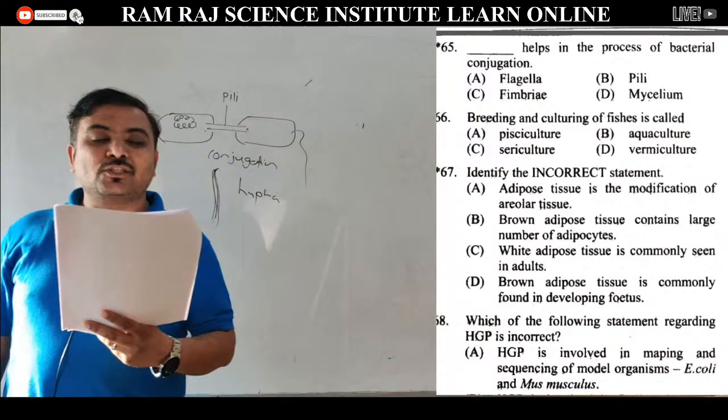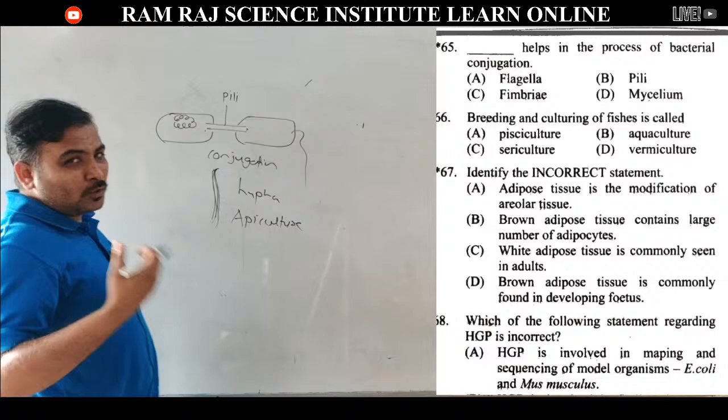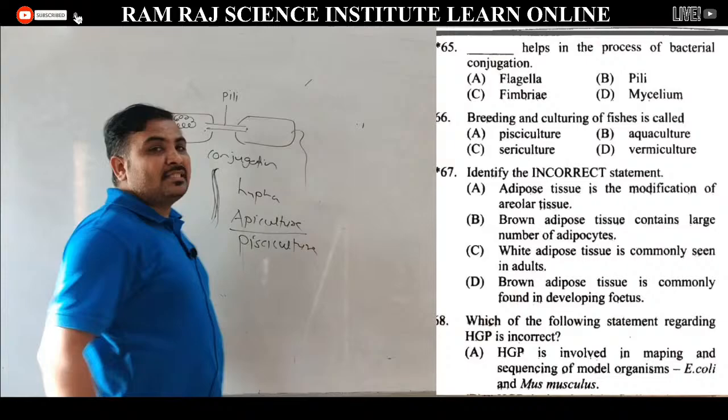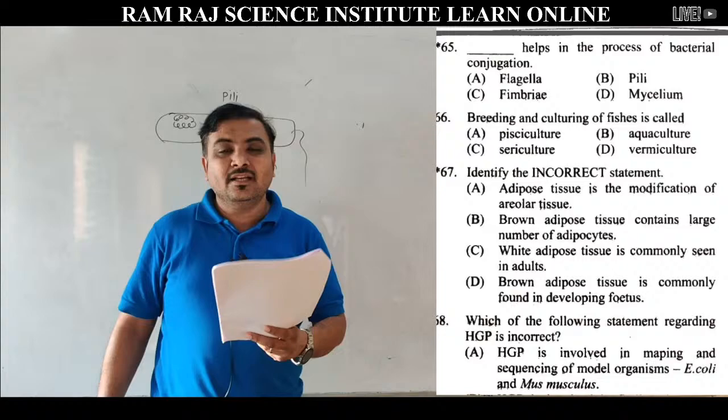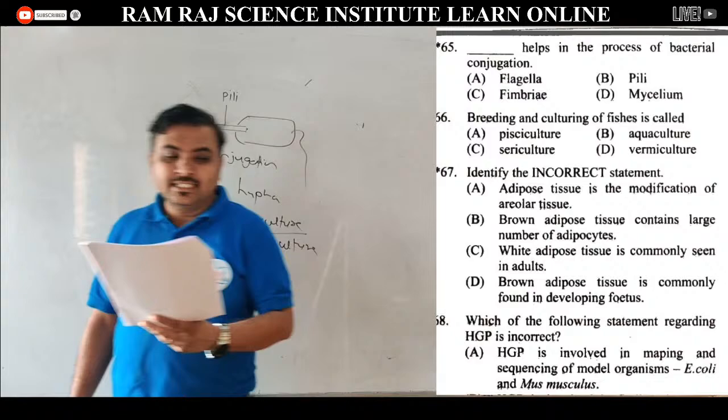Question number 66: breeding and culturing of fishes is called. जब fishes को artificially culture और breed किया जाए — जैसे rearing of honeybees को apiculture बोलते हैं — उसी तरह artificial rearing of fishes is called pisciculture. Sericulture is rearing of silkworms. Vermiculture is production of vermicompost using earthworms.